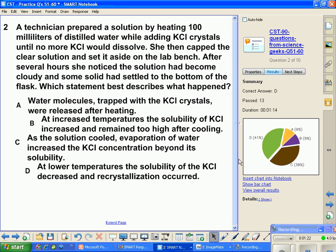A technician prepares the solution by dissolving 100 milliliters of distilled water. We're putting in KCl by heating this stuff. We're going to add the KCl crystals, potassium chloride, it's a salt, until no more KCl will dissolve. The heat helps us dissolve more. This was the extra credit assignment that we had for 15 points.